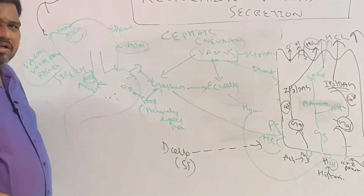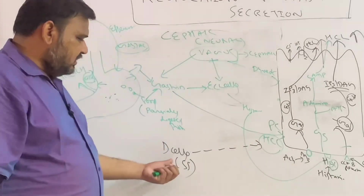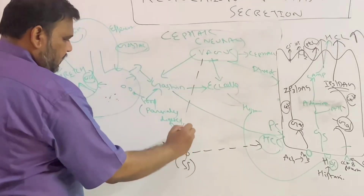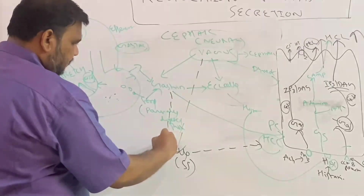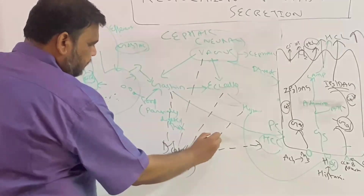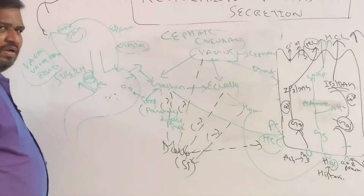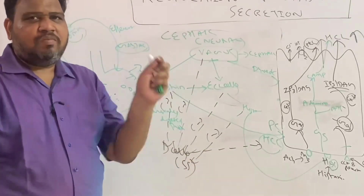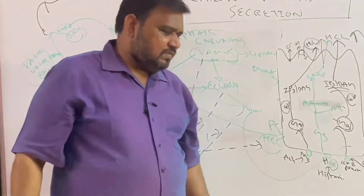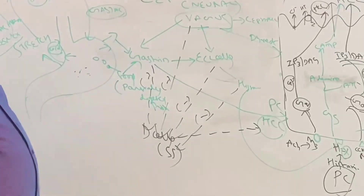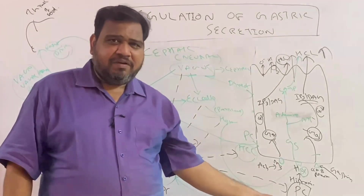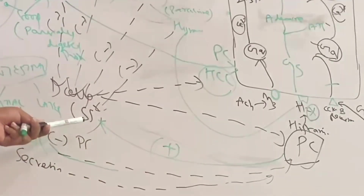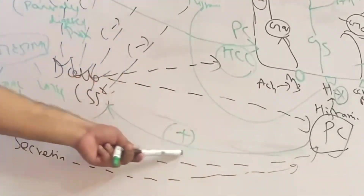Regarding D cells: vagus inhibits D cells because D cells secrete somatostatin which inhibits HCl secretion. Similarly, gastrin also inhibits D cells. Everything — vagus, gastrin, histamine — inhibits somatostatin to allow HCl secretion. Parietal cells also provide a negative feedback: when parietal cells secrete more HCl, they stimulate D cells to release somatostatin, which then inhibits the parietal cells — a classic negative feedback loop.